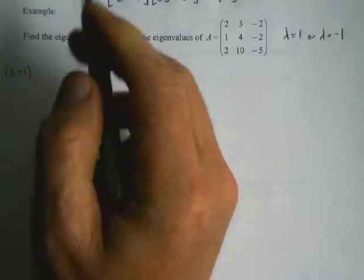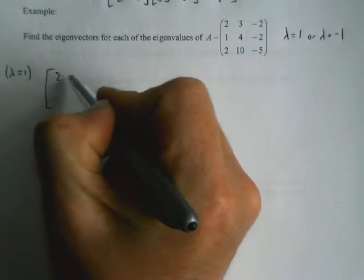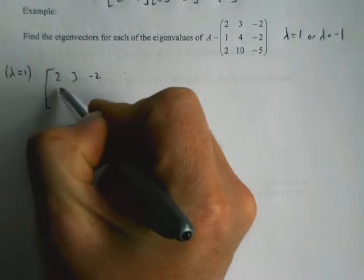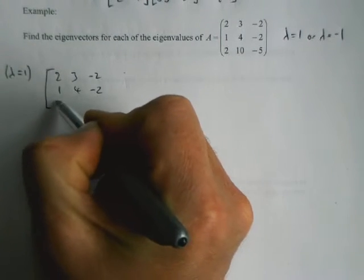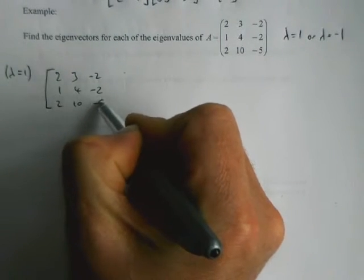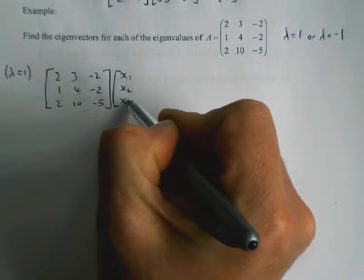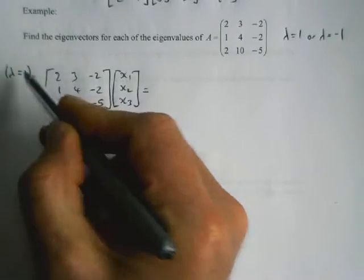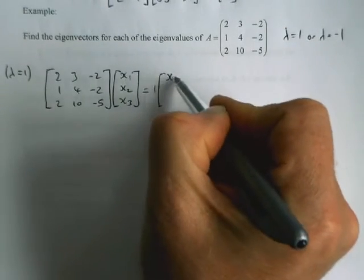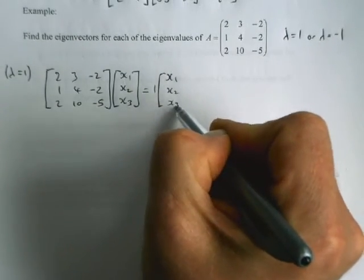So again, it's just trying to solve the equation that says A, which in this case is a 3 by 3 matrix, and we're going to be multiplying it by a vector. Because it's a 3 by 3 matrix, we want to multiply it by a 3 element vector. And it's going to equal, in this case, 1 lot of the same vector.